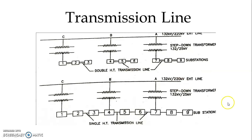Otherwise, we can use a single high-tension transmission line also. In the line diagram, we can see the layout for the double high-tension transmission line feeding power to the substation, as well as a single high-tension transmission line feeding power to the substation. But mostly, we use a double high-tension transmission line to ensure continuity of power even in fault conditions.